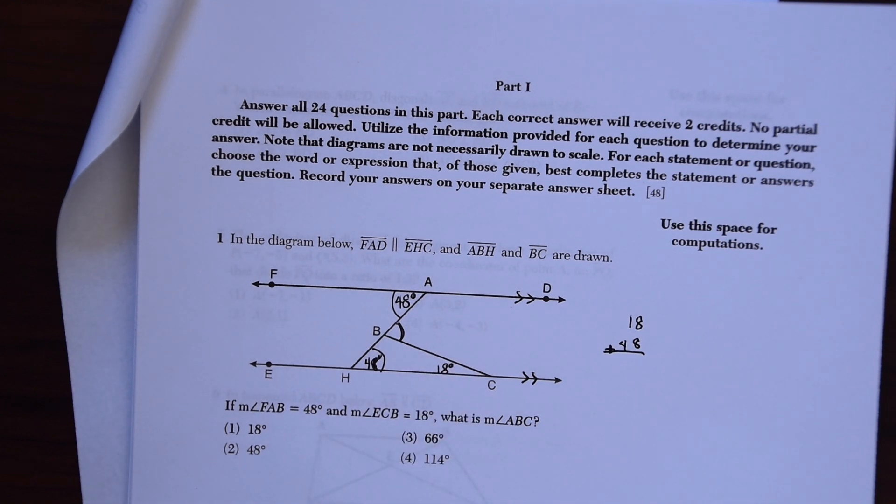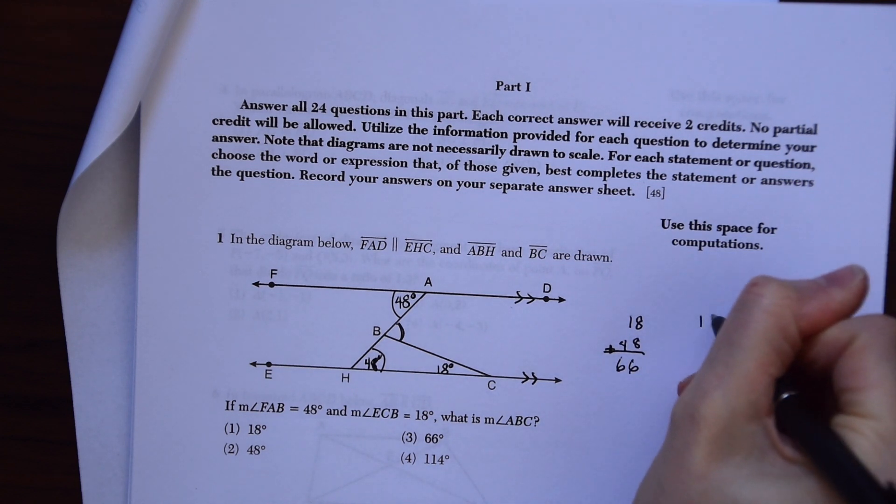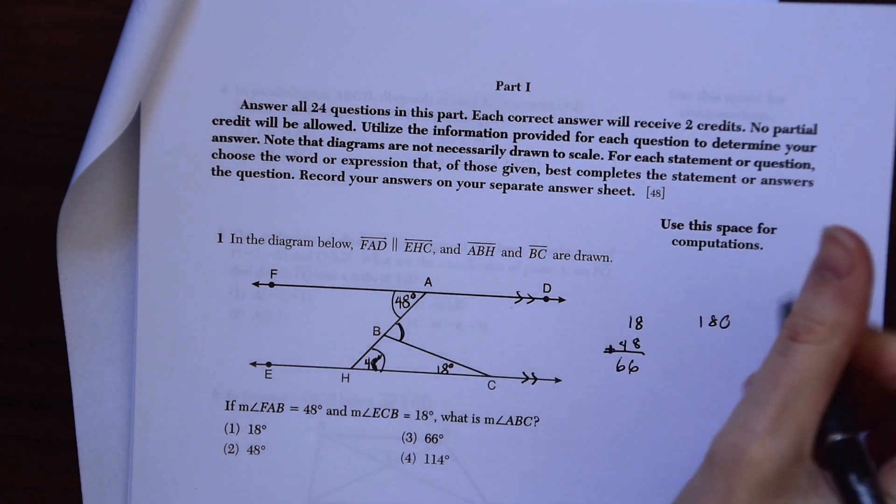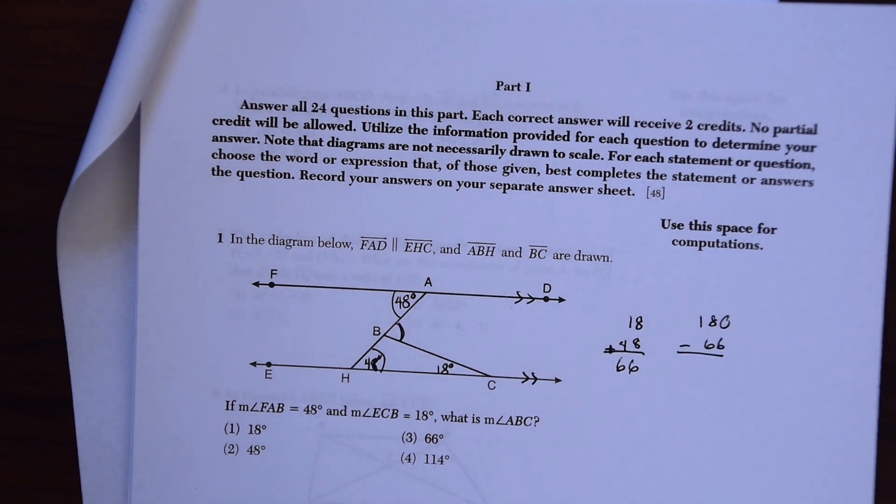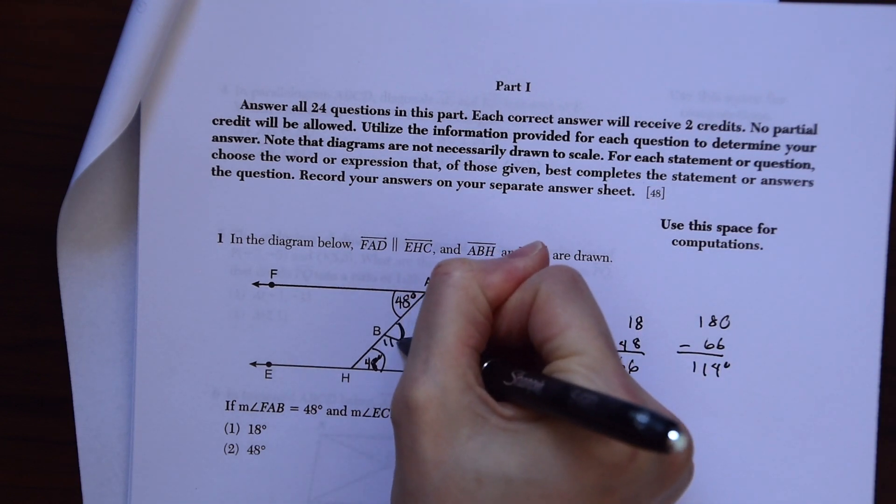So let's add 18 plus 48. We get 66. Then we know 180 degrees is in a triangle, so we're going to subtract this and see what's left over. And we get 114. So 114 degrees is in here.